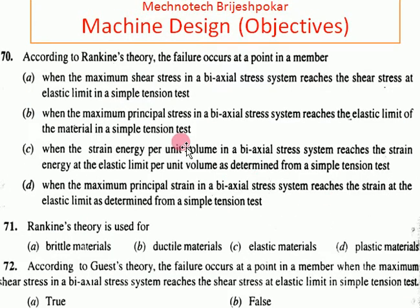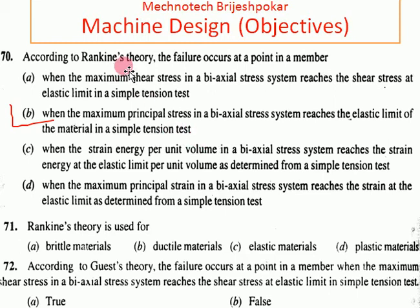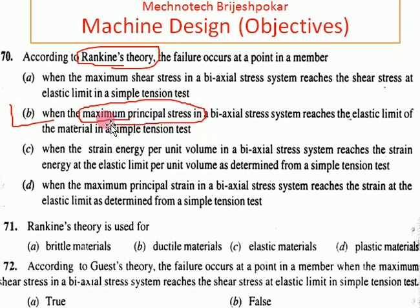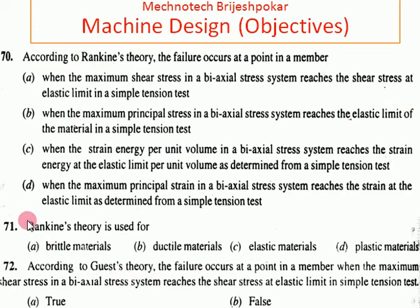According to Rankine theory, failure occurs at the point in a member when the maximum principal stress in a biaxial stress system reaches the elastic limit of the material in a simple tension test — answer is B. Rankine theory is based on maximum principal stress and is used for brittle materials.